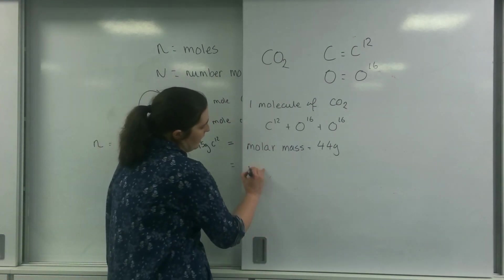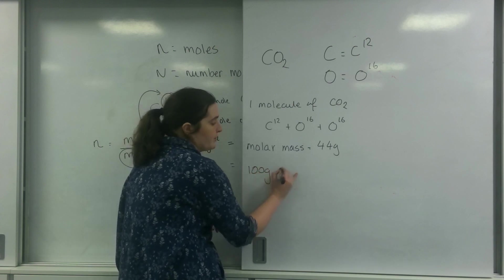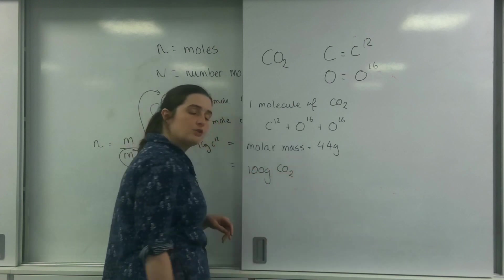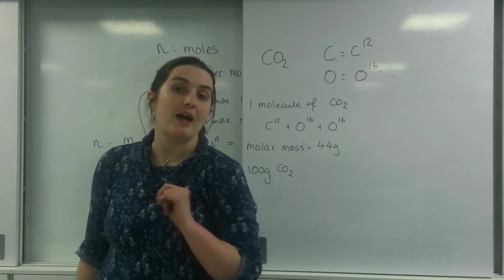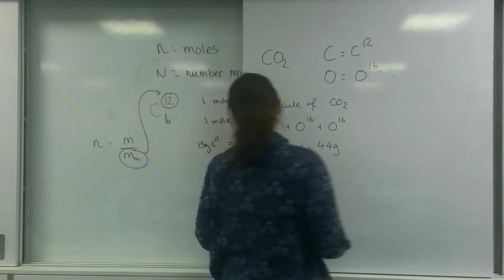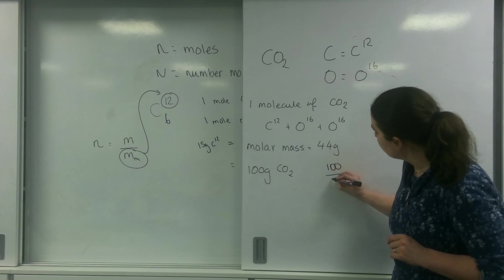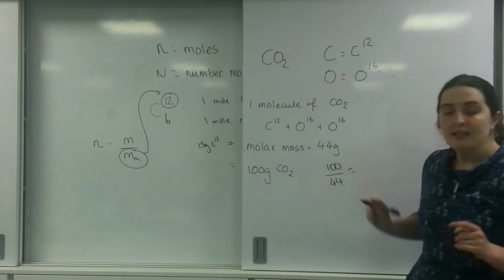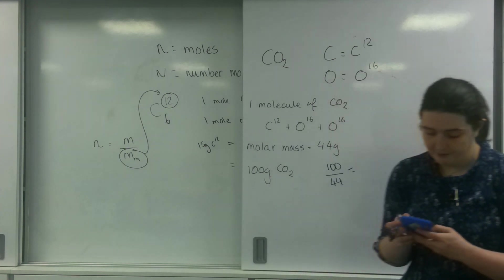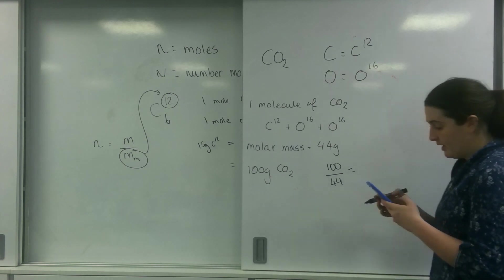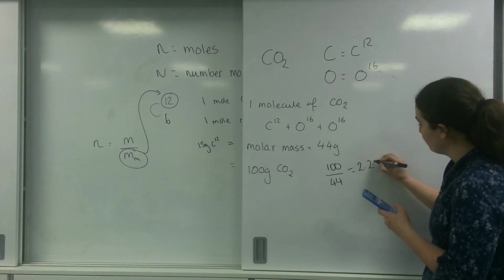So let's say I had 100 grams of CO2, and I want to know how many molecules of it I have. So let's find how many moles I have first. 100 divided by 44. This will give me the number of moles I have. And that's going to be 2.27 moles.